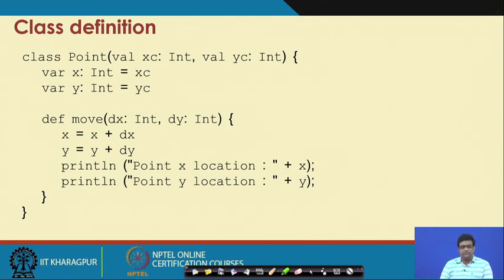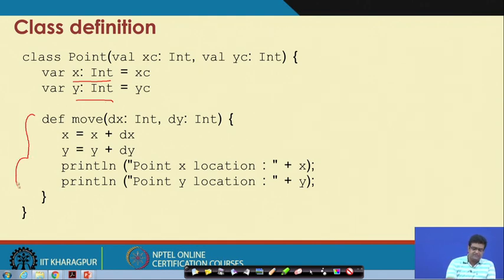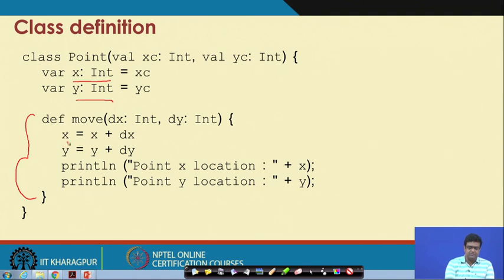This is an example of a class definition in Scala. We define a class Point which has two components, xc and yc, both of type Int, perhaps storing coordinates. There is a method called move which takes dx and dy as input — the amounts by which you want the current point to move — and it computes the new x as x + dx and the new y as y + dy.